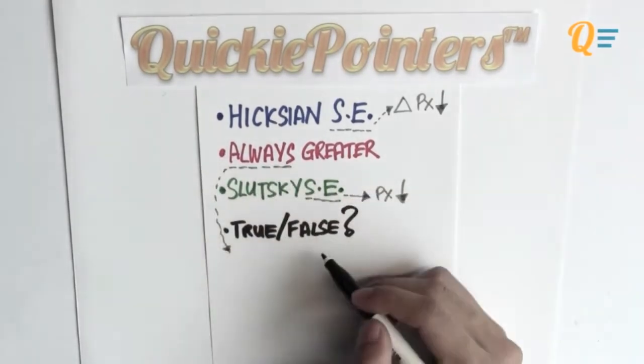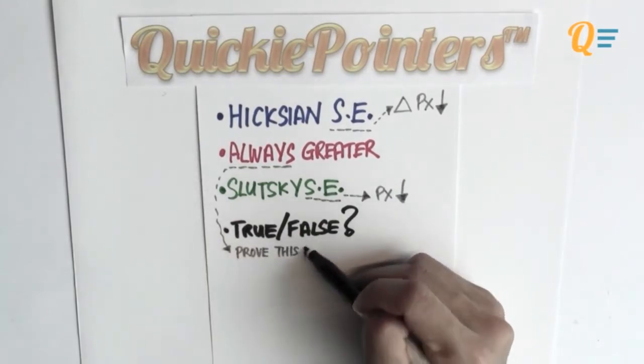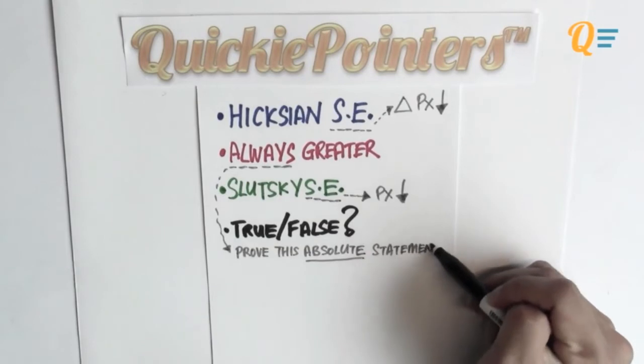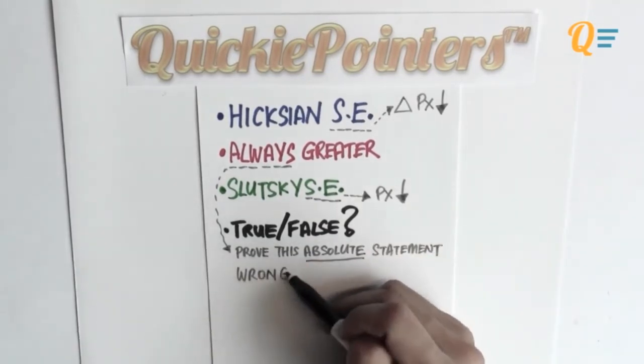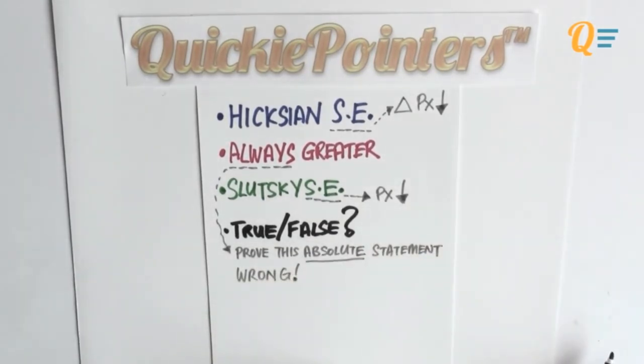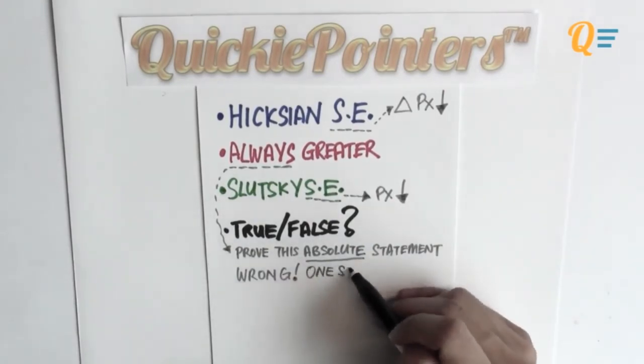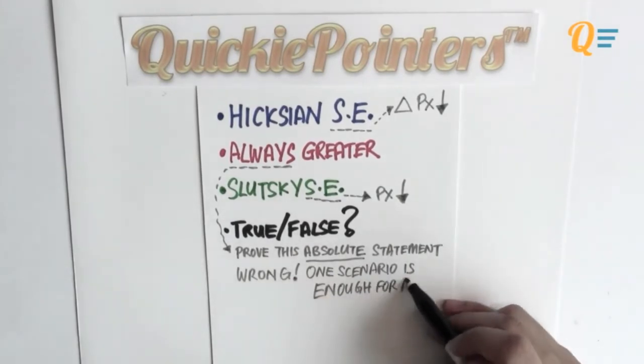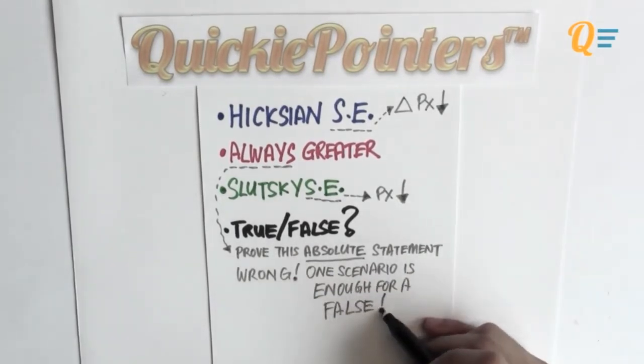Now take note of the word always. The word always is a very absolute term, right? So you want to try and prove this absolute statement false. It's going to be much easier than trying to prove that it's true because you only need one scenario to prove that this statement is false and then you have fully answered the question. So be smart, just try to find something that's going to prove this statement false.